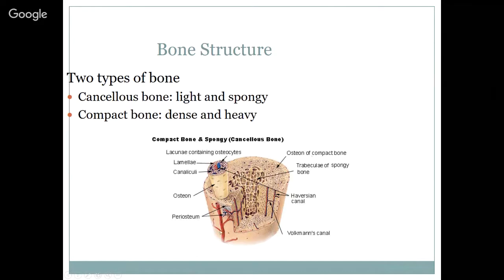The periosteum is the outer covering of the whole bone. There are Haversian canals that go the entire length of the bone and carry vessels. There are little canaliculi — tiny canals that go in between. The long lines are the vessels that go the length of the bone; that's the Haversian canals. In the center of this H-shape is called Volkmann's Canal, and it connects one osteon to the next. Inside the spongy bone, that's where the bone marrow is — where the cells that make up the differential cells of the blood are held within the trabeculae of spongy bone.